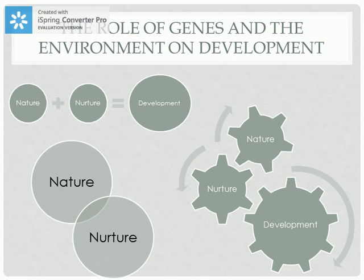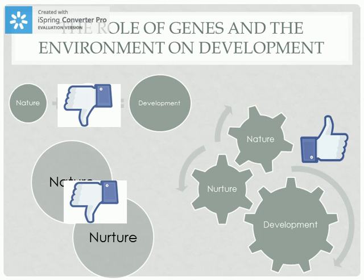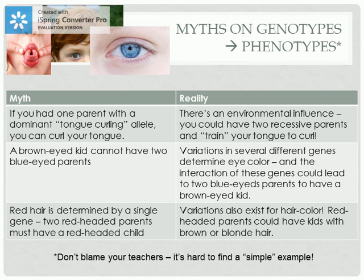We know that we can't separate nature and nurture like parts of an equation, and it's probably not best to think about them as a Venn diagram where some traits are explained by nature, some by nurture, and some by both. It's much more complicated and intertwined — like cogs that drive each other. In fact, many simple examples you've been given on how specific genotypes lead to certain phenotypes just aren't quite accurate.